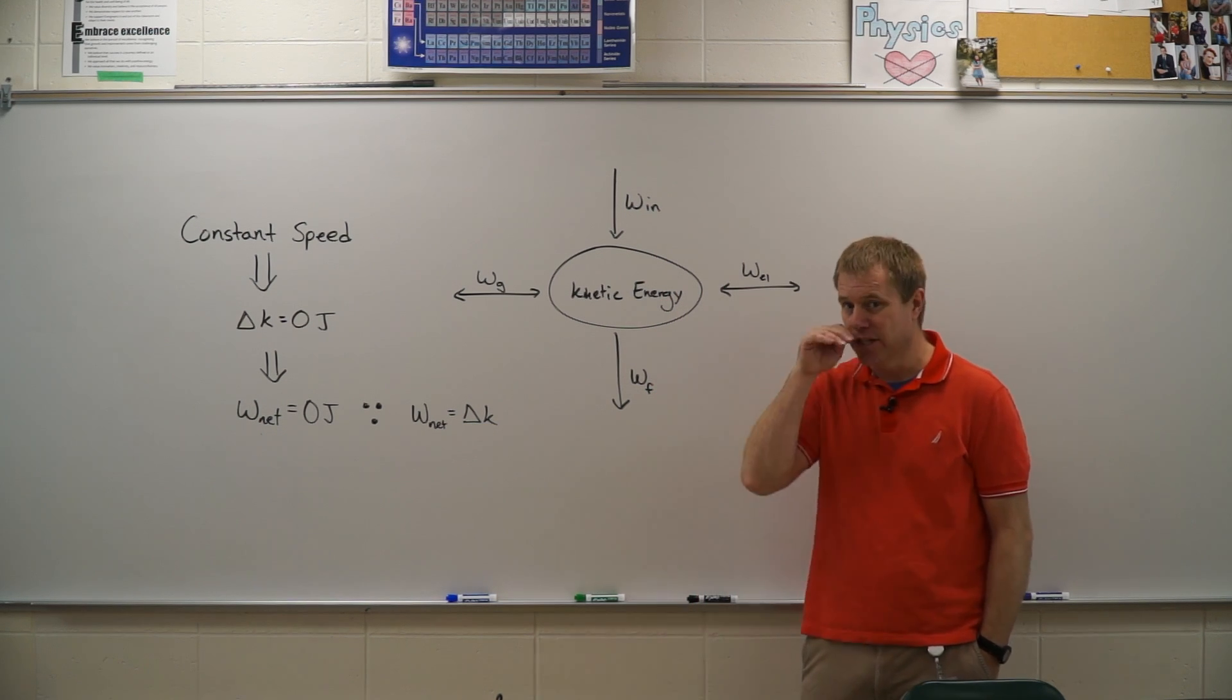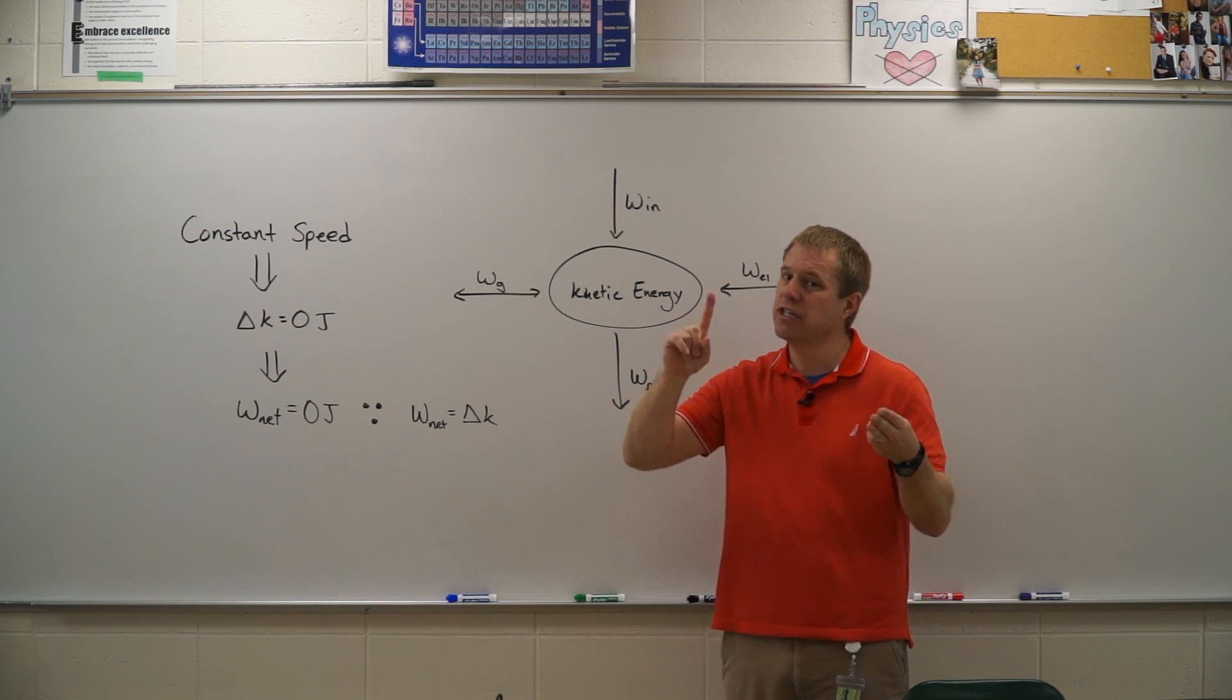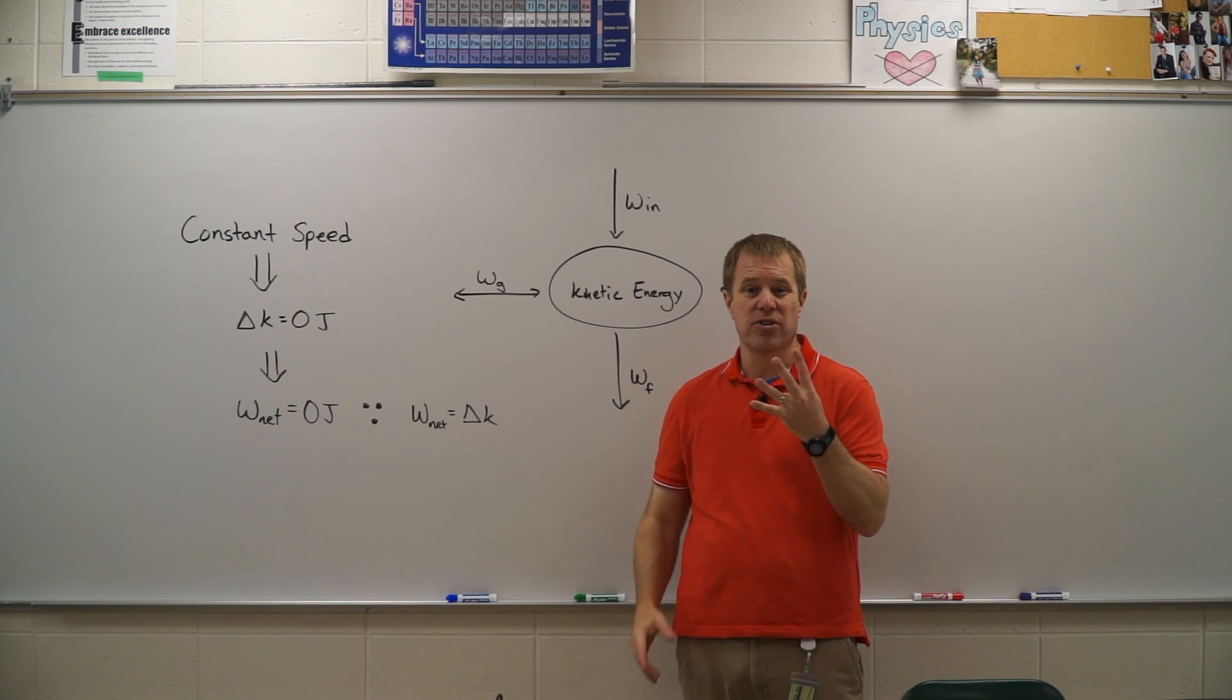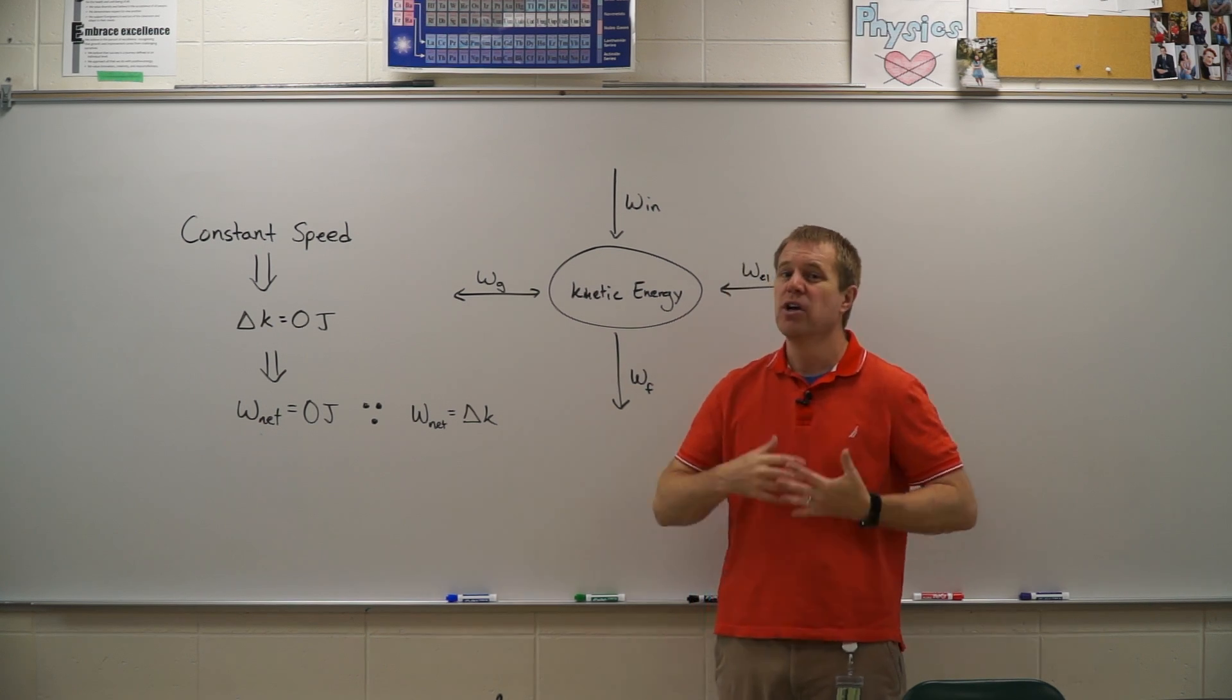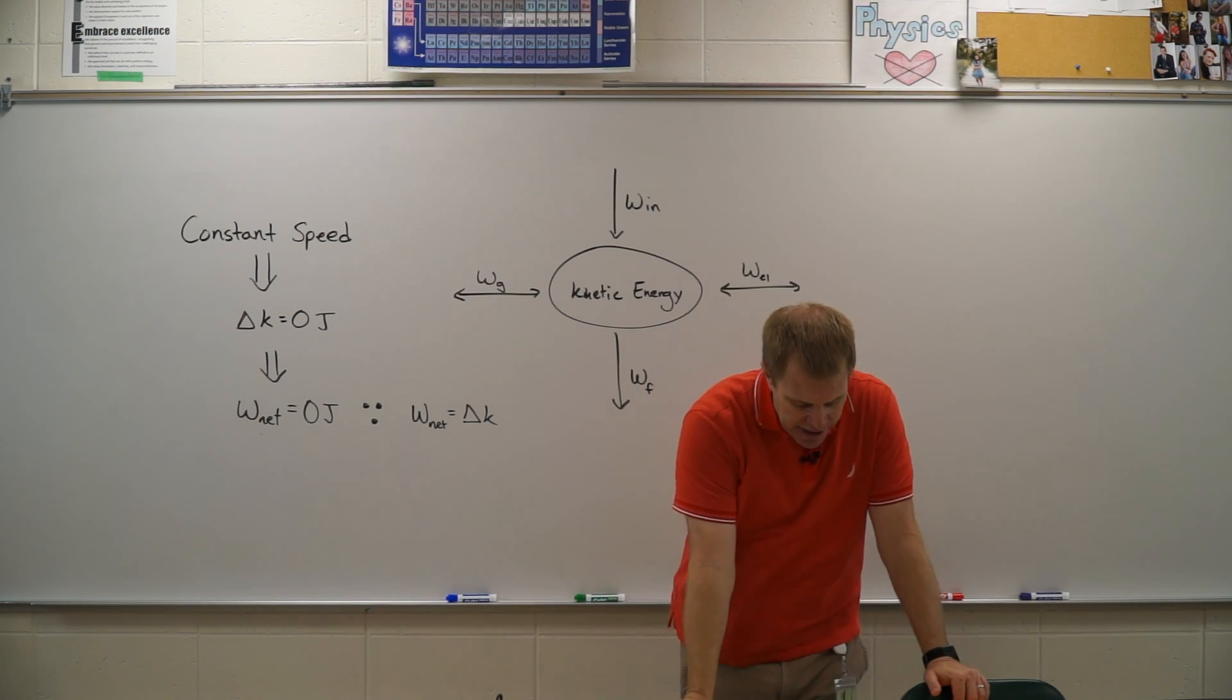So do I need to find how much work the gardener did, how much work friction did, how much work gravity did, how much work the normal force did in order to add those up to get the network? No, I just need to look for that word constant speed in this case.